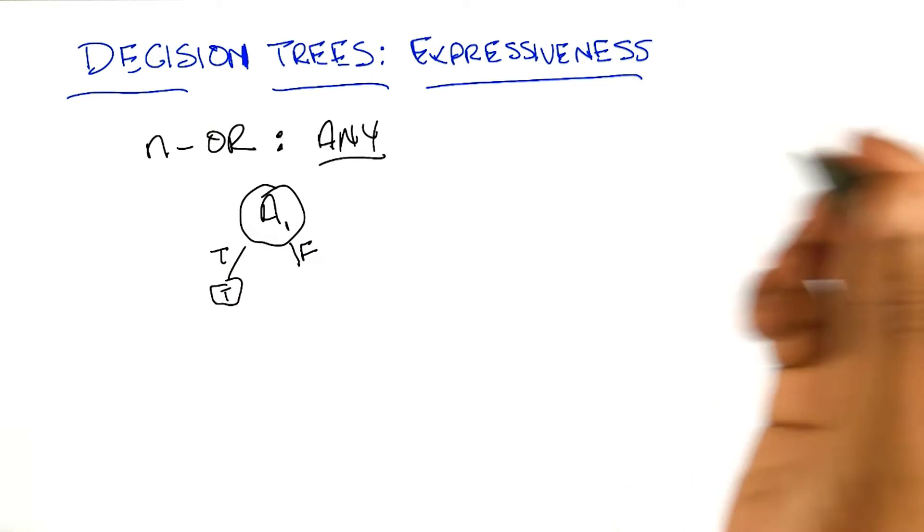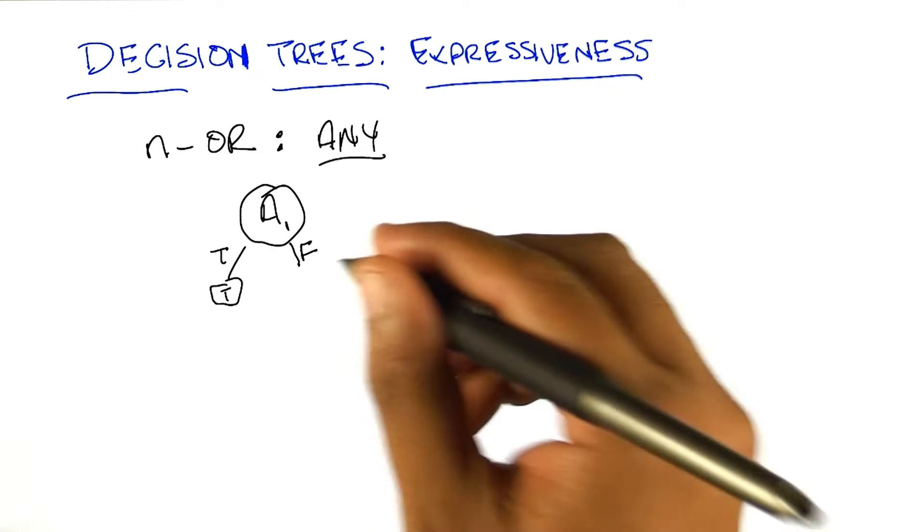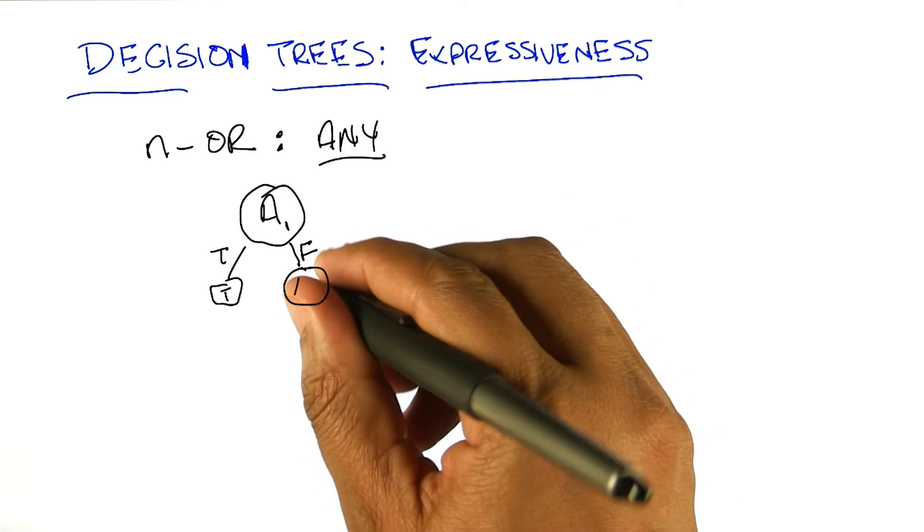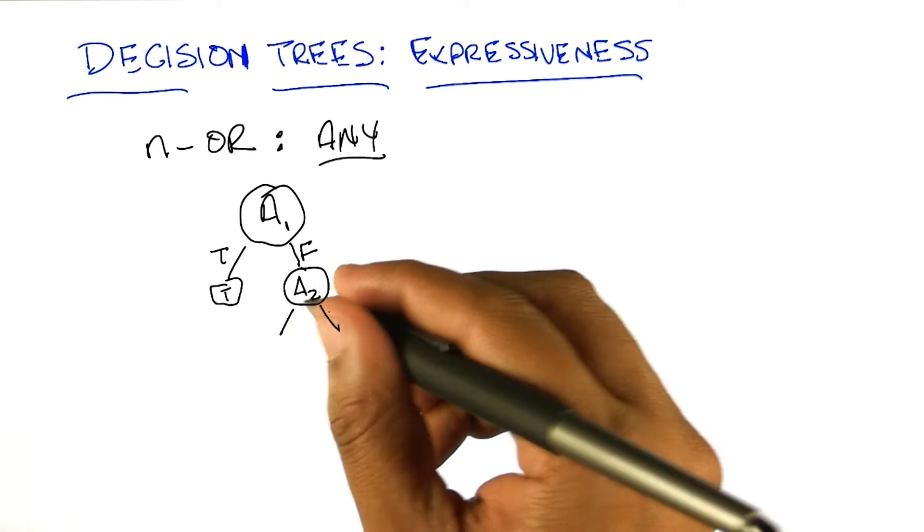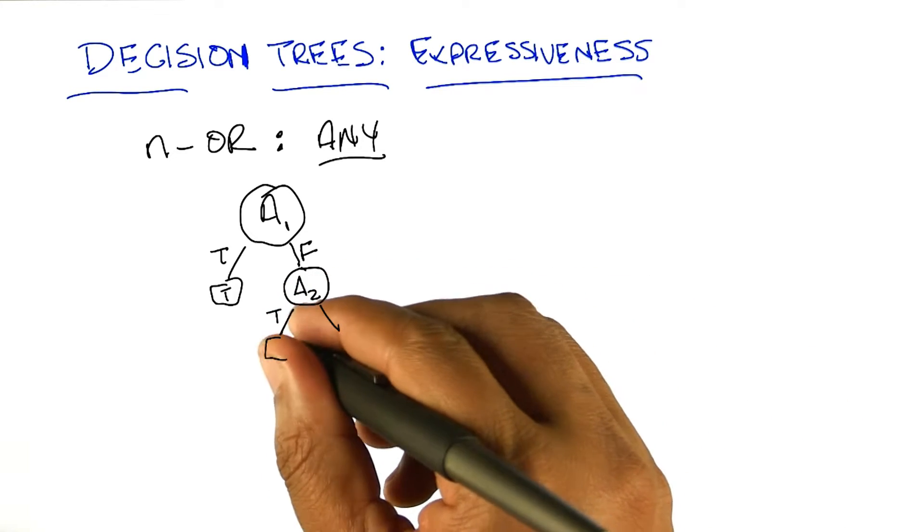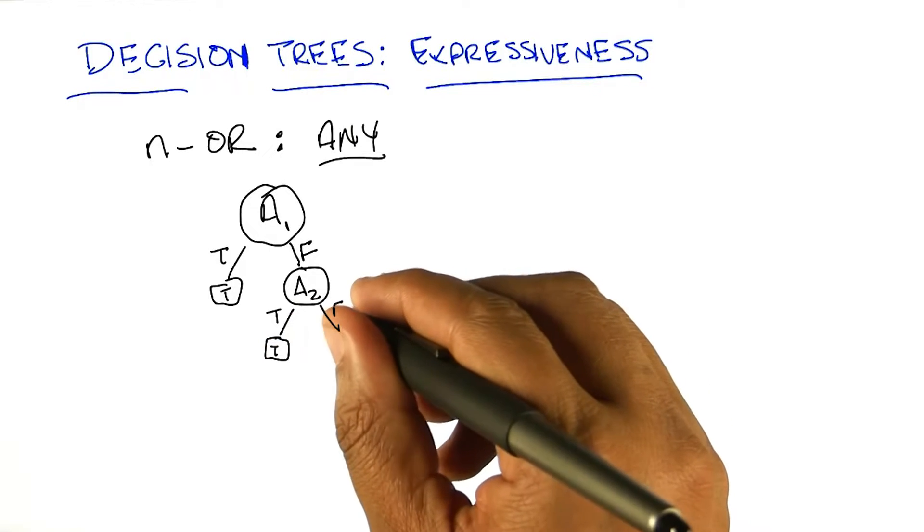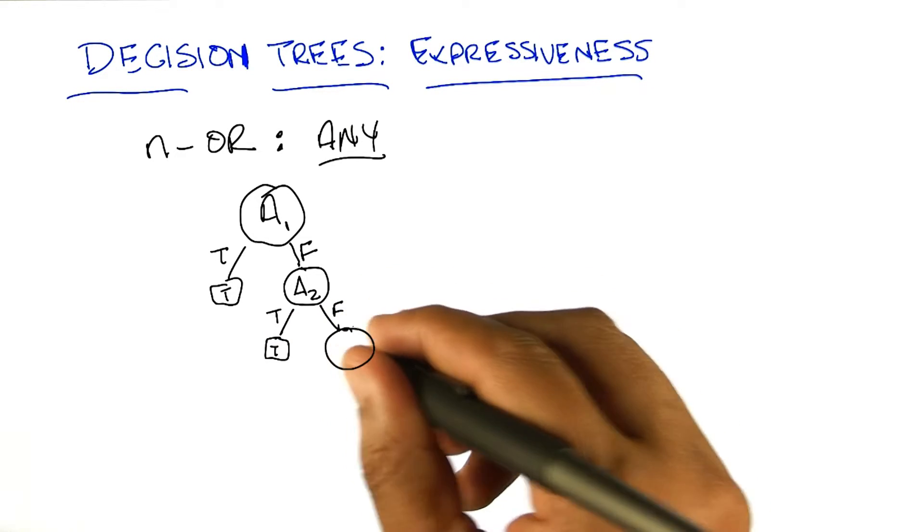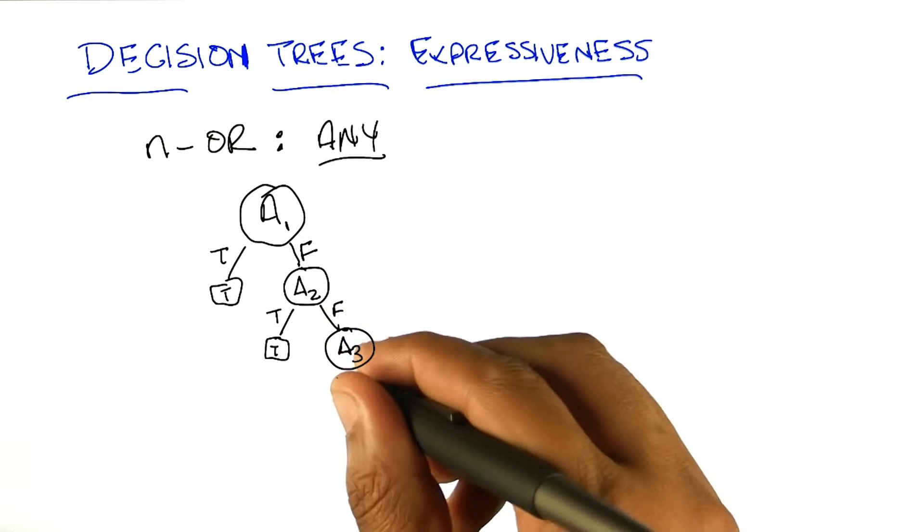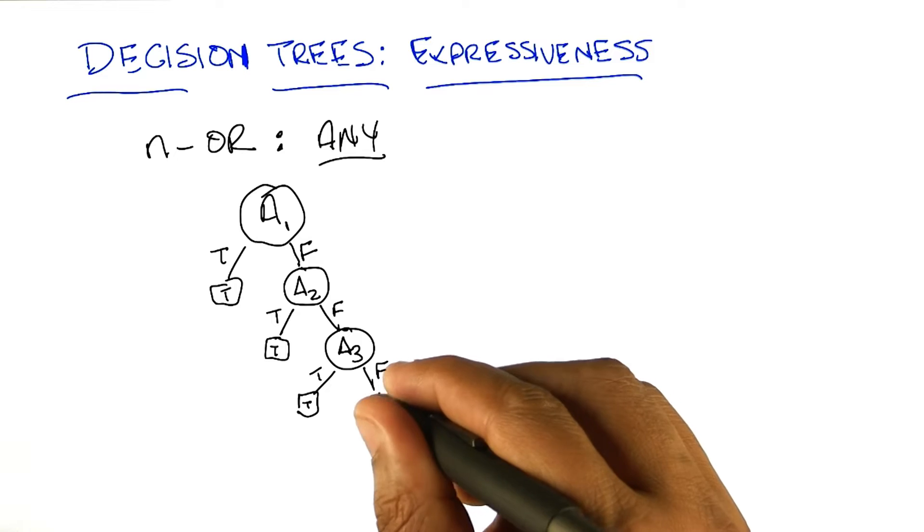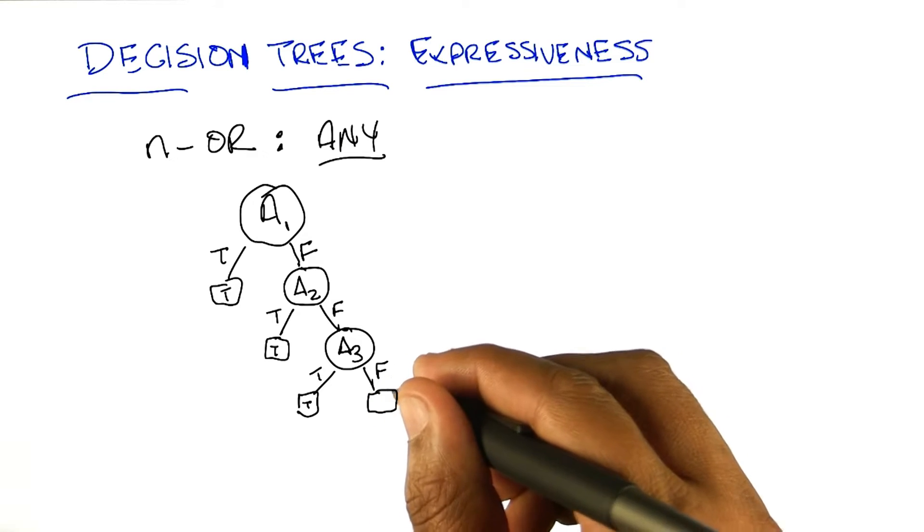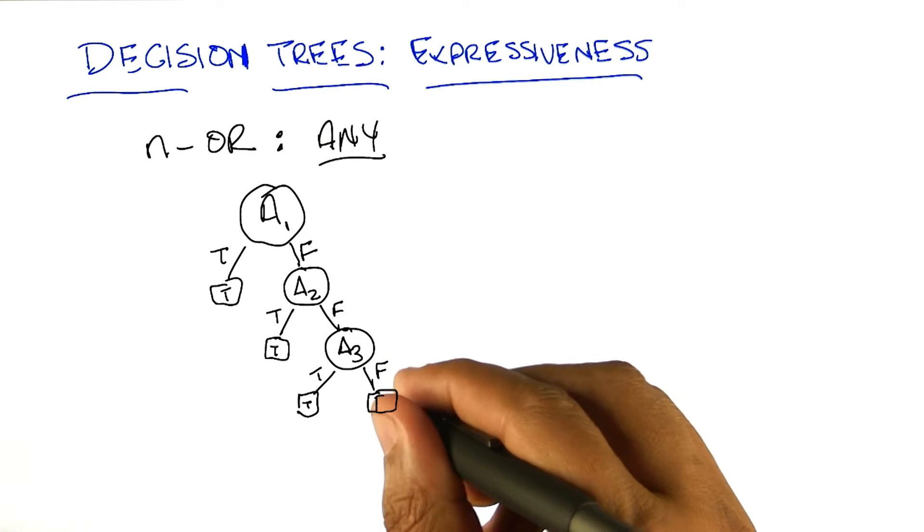Well, then we have to check everything that's left. So then we move on to one of the other attributes like A2. And again, if it's true, it's true. And if it's false, then we don't know. We'll look at A3. This could take some time. That's actually an interesting point. Let's say if there were only three, we would be done, right?